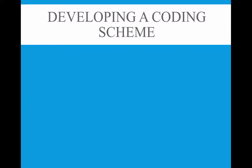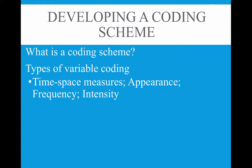Next, you develop a coding scheme, which is really operationalizing the variables in your hypothesis. You list all of your variables and the codes to be applied — it's like a list of close-ended questions in survey research, except instead of asking a person, you apply the question to the document itself, coding it as a one for yes or zero for no. Types of variable coding include time/space measures — the time or space devoted to a topic, like column inches in a newspaper.